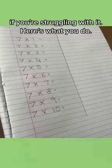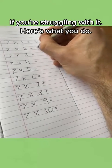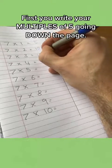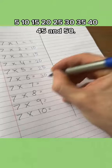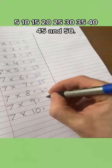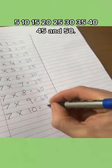Here's a hack for the 7 times table if you're struggling with it. Here's what you do. First, you write your multiples of 5 going down the page: 5, 10, 15, 20, 25, 30, 35, 40, 45 and 50.